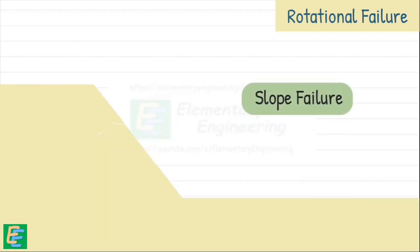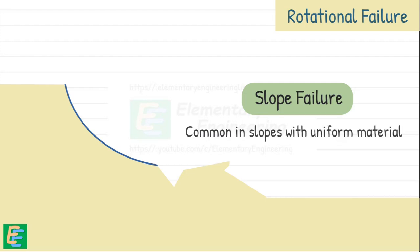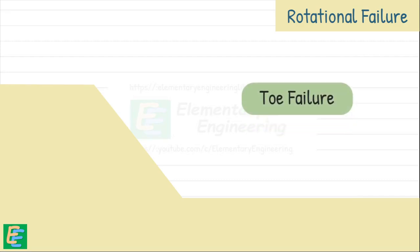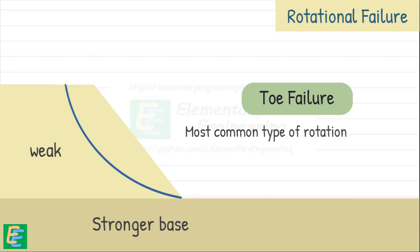First is slope failure. This happens when the failure surface cuts through the sloped section. It's like a slice through the middle causing the upper part to slide down. It is common in slopes with uniform material properties. Then second category is toe failure. Here the failure happens along a surface that passes through the toe of the slope. It often occurs in slopes with a stronger base but weaker upper layers. This is the most common type of rotational failure.